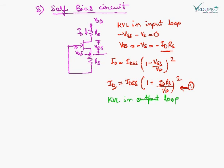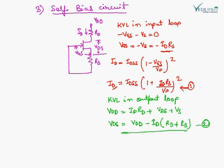We apply KVL in the output loop. We get this equation and we find the drain to source voltage is given by VDD minus ID into RD plus RS. So with this, we can calculate the operating point of this circuit.